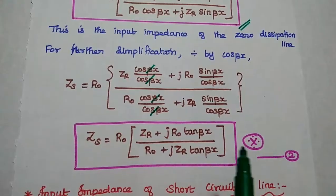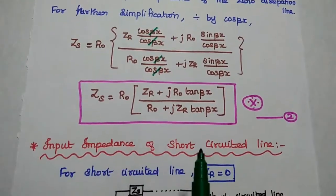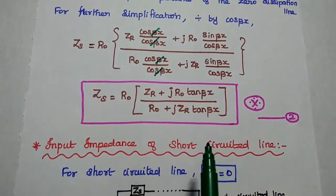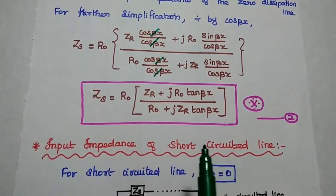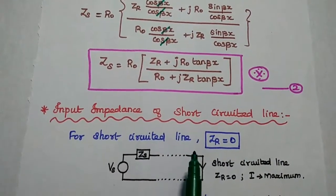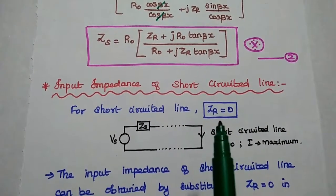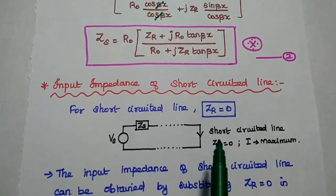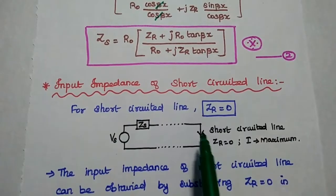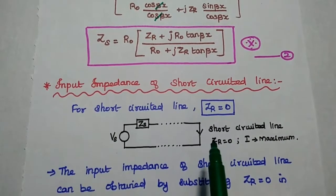Consider this as the second equation. This formula is very important. From this we can find out the input impedance for short circuited line as well as for open circuited line. First, we are going to derive the input impedance of the short circuited line. For short circuited line, the receiving end impedance becomes 0. If it is short circuited, there is no impedance — the current is maximum and voltage is minimum.